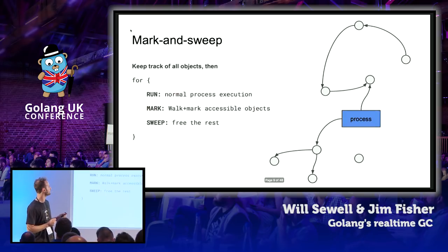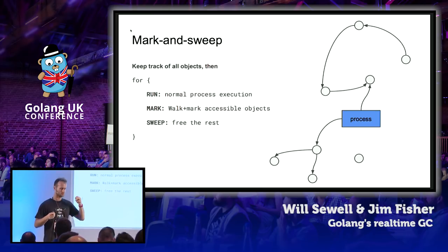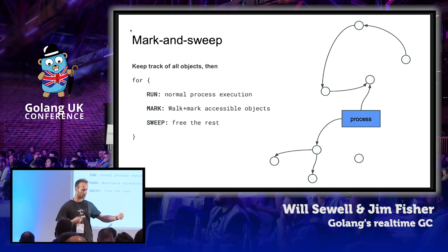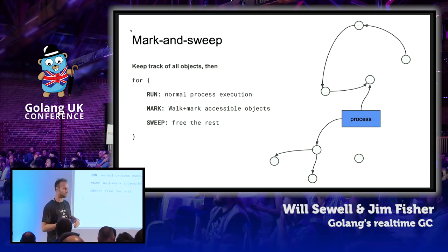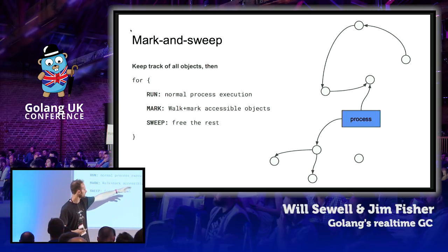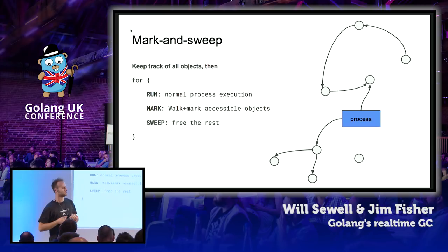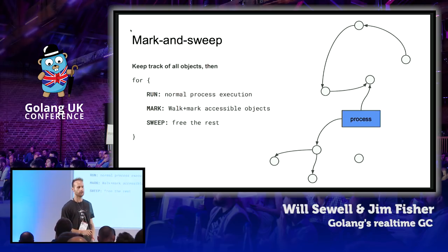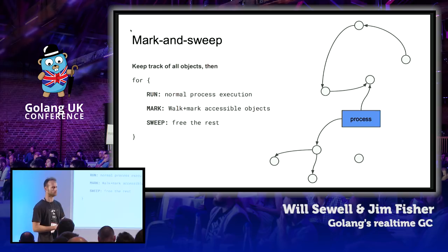How does Mark and Sweep work? You forever do these three things: first, run your program for a while. Then you stop it and go into the Mark phase — you mark the objects which are accessible by tracing out from your process, looking at all reachable objects and marking those. Then you go to the Sweep phase, where you traverse everything in the entire heap and sweep away the ones that are not marked. Then you continue running your program.